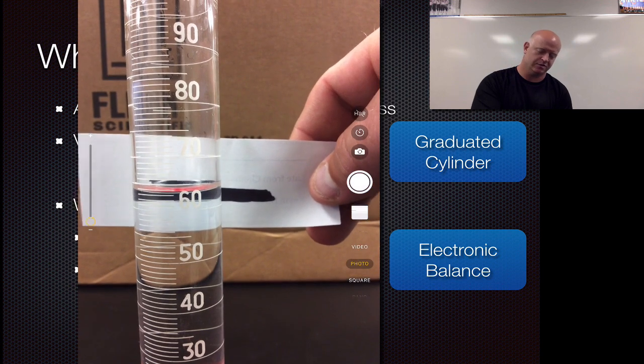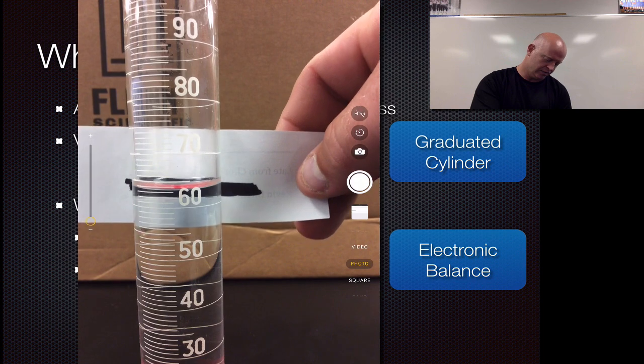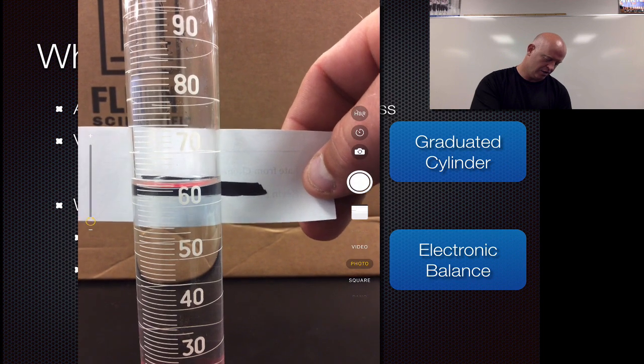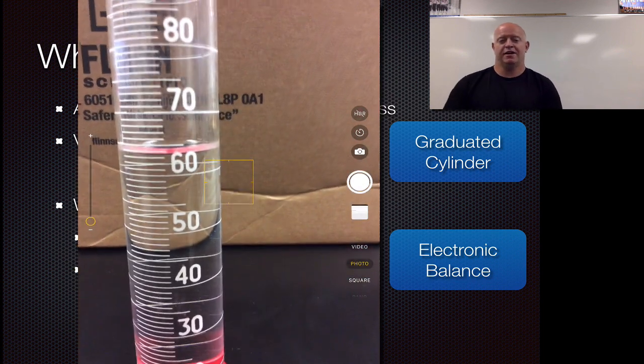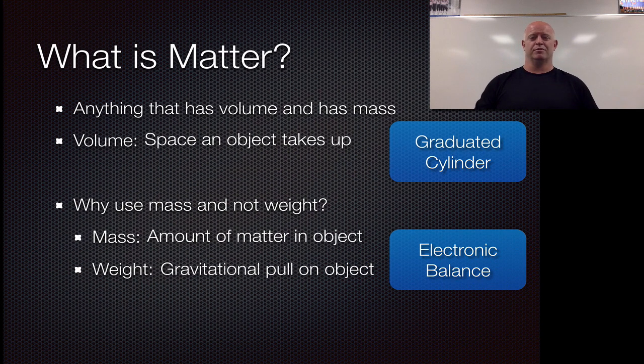By doing this, what we're looking for is the bottom of the meniscus, which is the bottom of that little curvature you see in that line. We go up and down, we see that curvature there, we want to measure the bottom of that. If I did that, if you looked at that, it's probably about 63.5, 63.6 maybe milliliters of water is what I put inside this graduated cylinder.